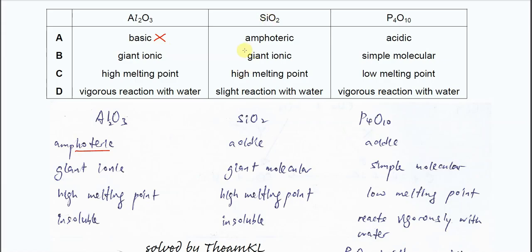The silicon dioxide is acidic and phosphorus oxide is acidic. Therefore A is wrong.